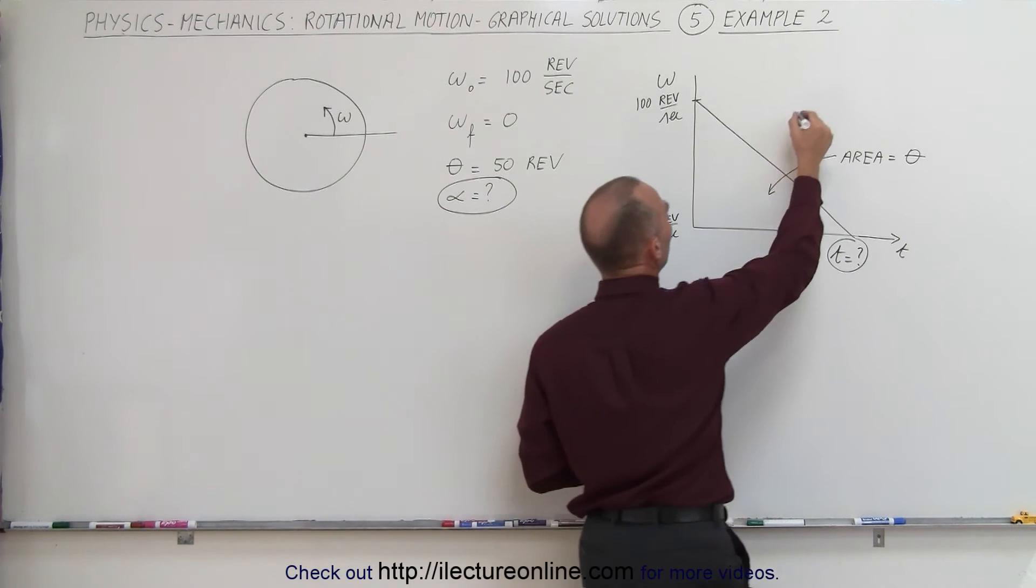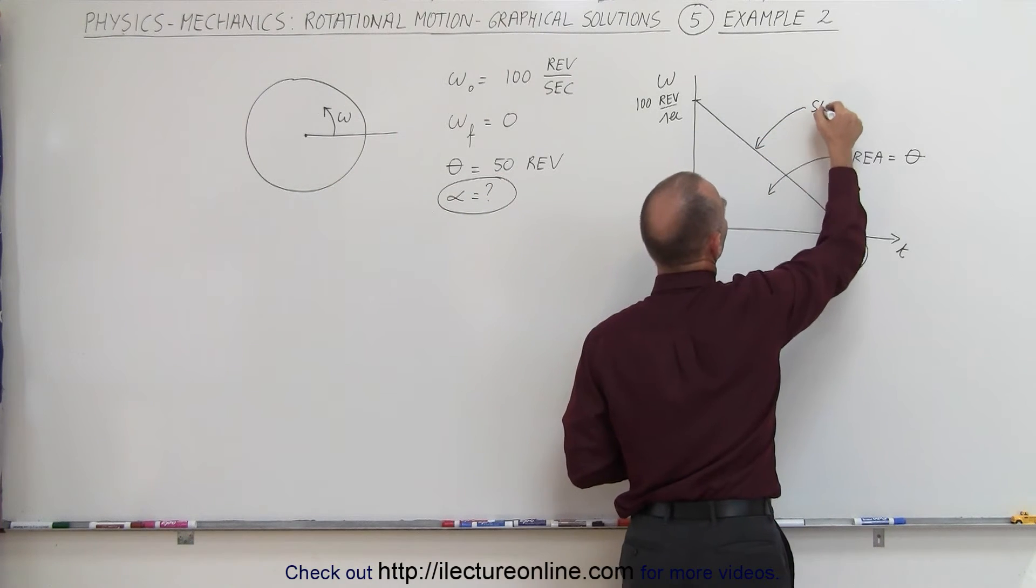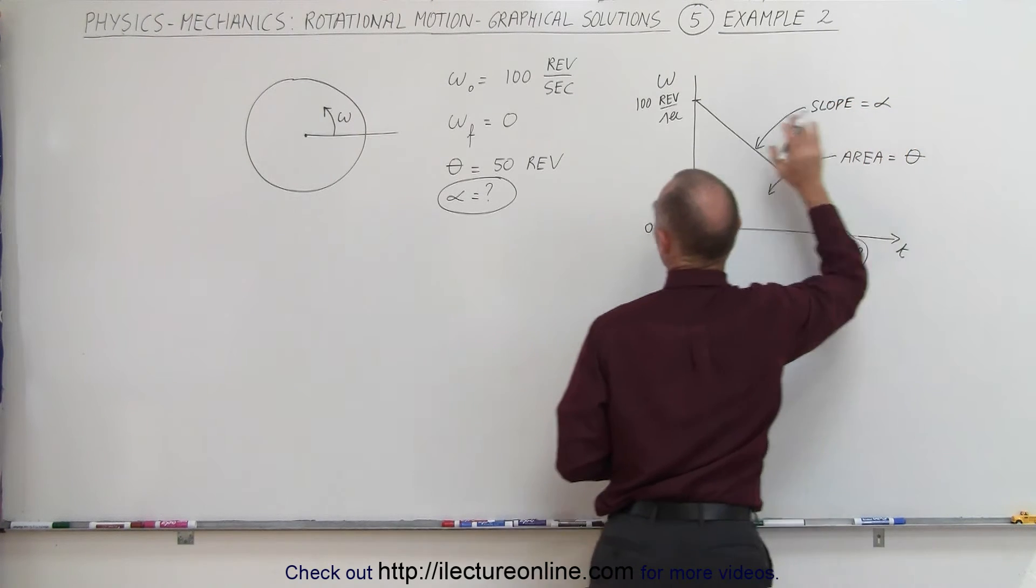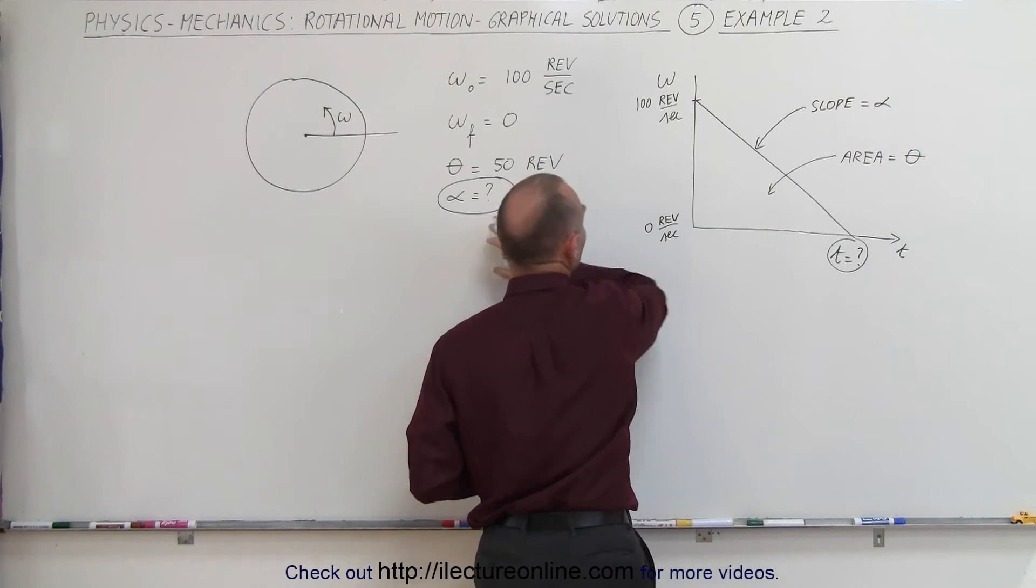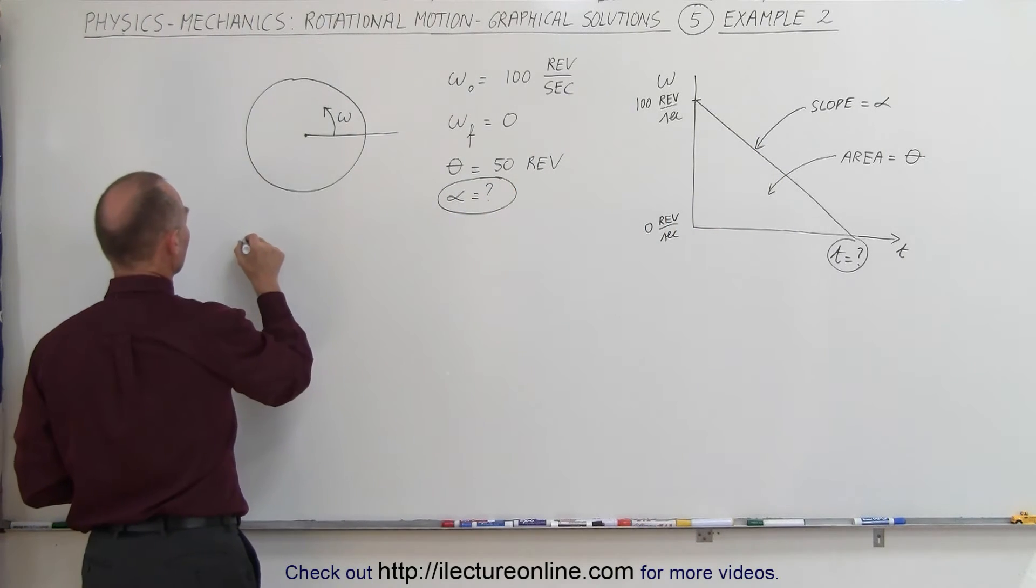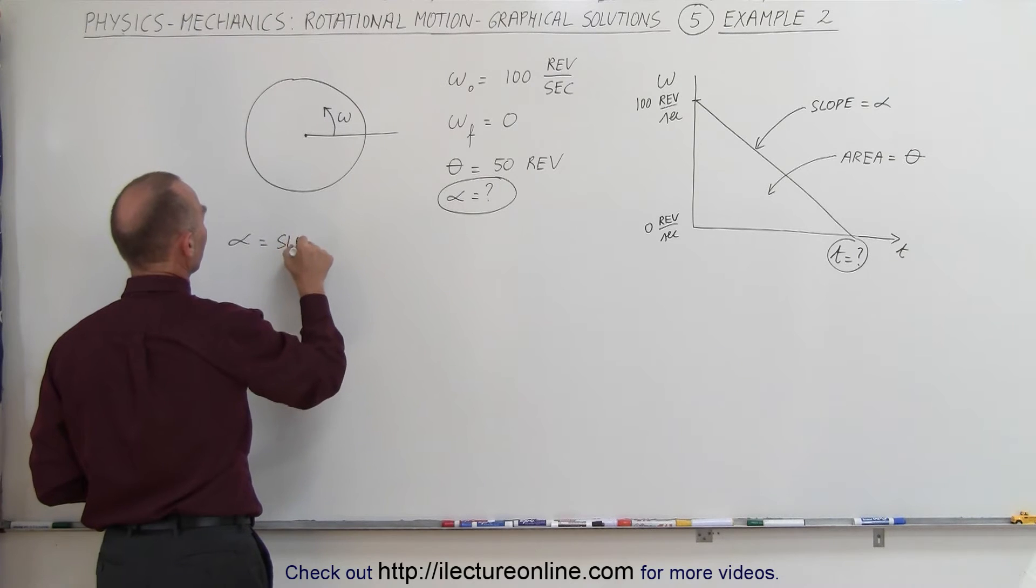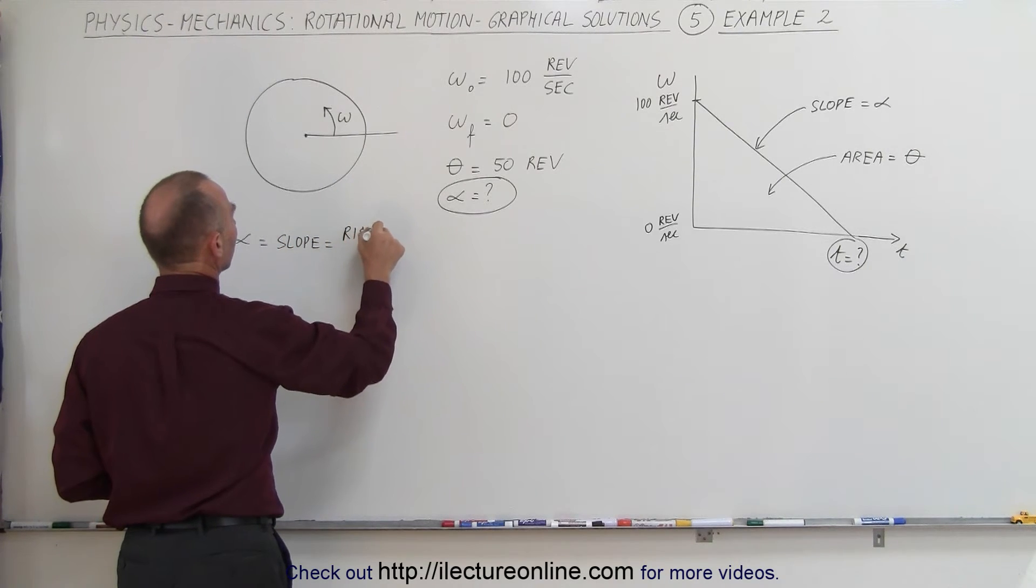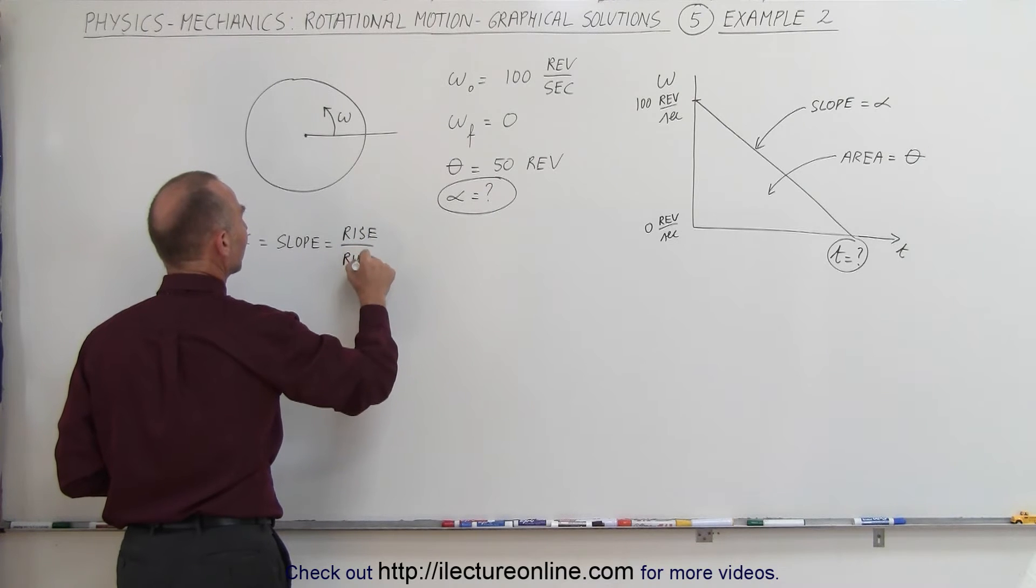We also know that the slope represents the angular acceleration, and the angular acceleration can be found by calculating the slope of this. So we can say that the angular acceleration equals the slope, which equals the rise divided by the run.